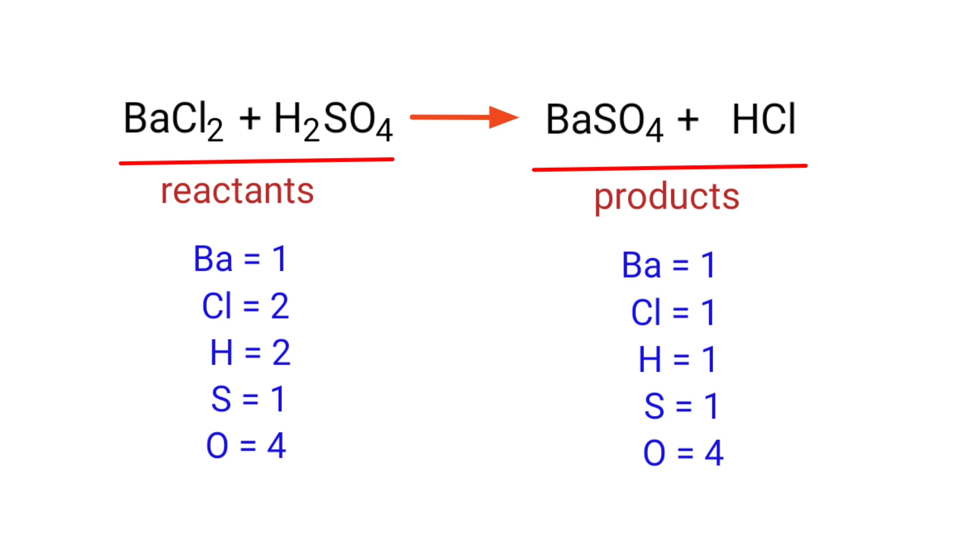In this equation, we need to balance the hydrogen and chlorine atoms. To do this, we need to put a coefficient of 2 in front of HCl.